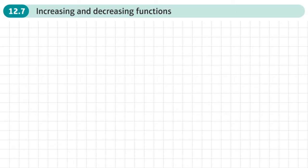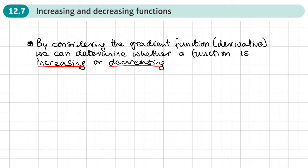This is the seventh section of chapter 12 on differentiation, and this section is about increasing and decreasing functions. By considering the gradient function — that's the derivative — we can determine whether a function is increasing or decreasing.